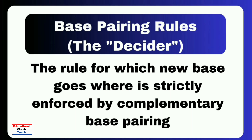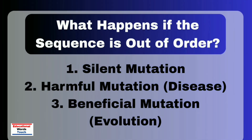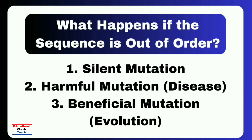Now, what happens if the sequence is out of order? If the sequence of bases gets disrupted, it results in a mutation. While cells have sophisticated DNA repair mechanisms to fix most errors, those that persist can have consequences ranging from silent to catastrophic.